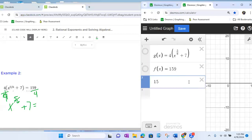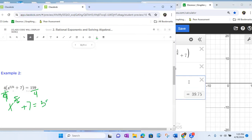Please have that Desmos out. Make those calculations as we're going along. 39.75, so I'm going to write 39.75.